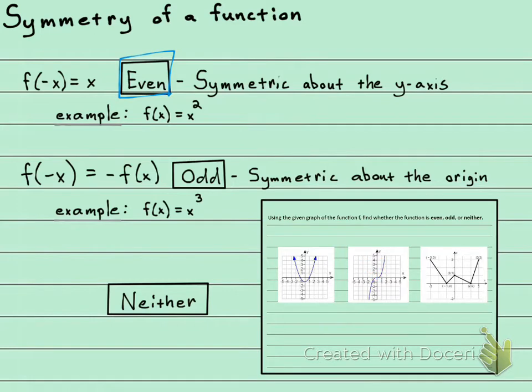Then we have the possibility where it is neither. Neither would be like this example over here. If I flipped it over it would look like this, which is not exactly the same. If I flipped it again, it's gonna give me something like this, so this is neither. We have three possibilities, and we find those by plugging in a negative x.